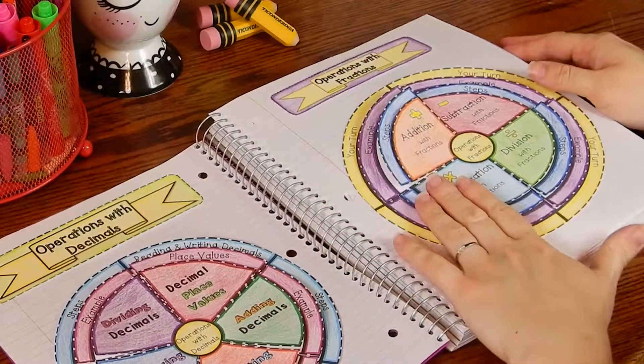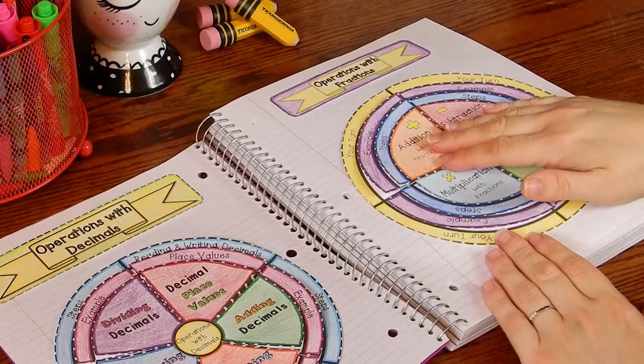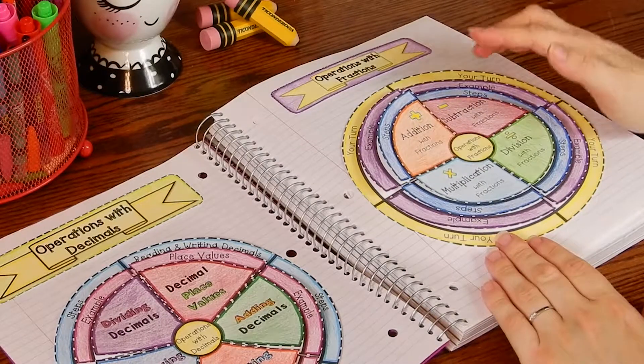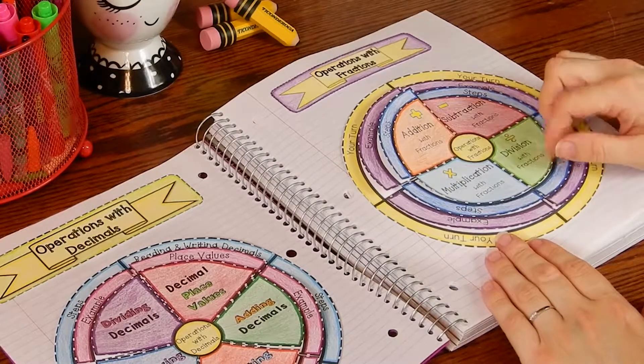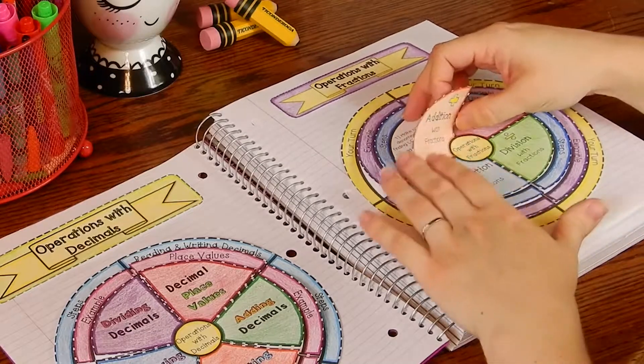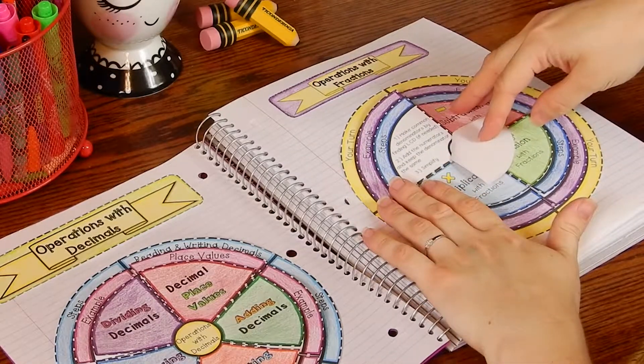Okay, and so on this side I have my operations with fractions wheel foldable. It goes over addition, subtraction, multiplication, and division, and you will see that the first layer is the steps.